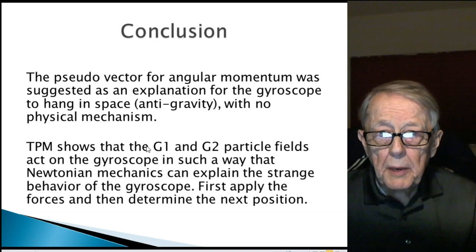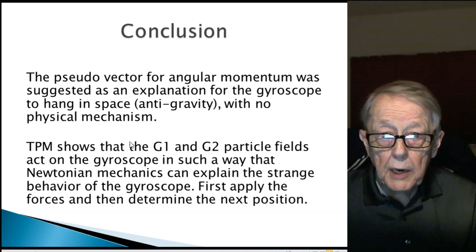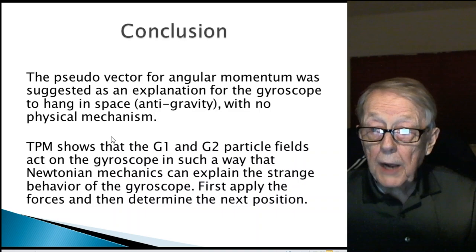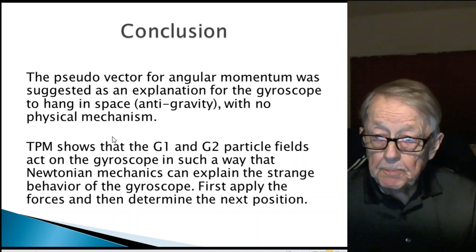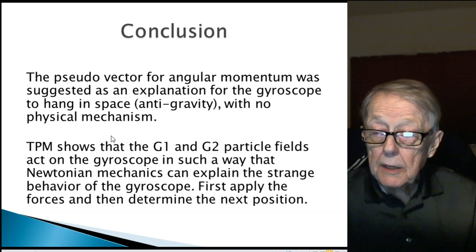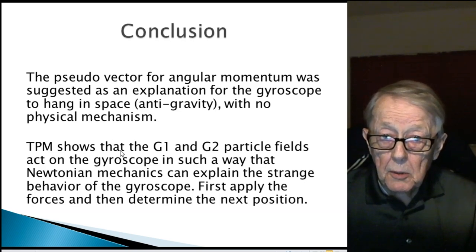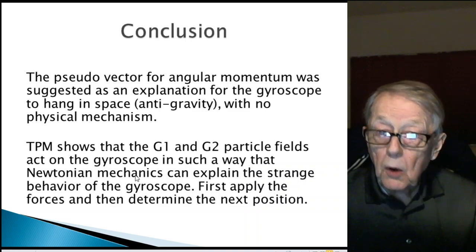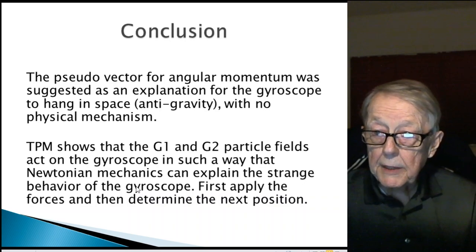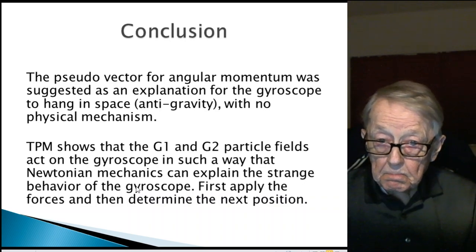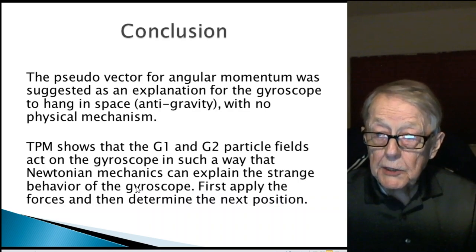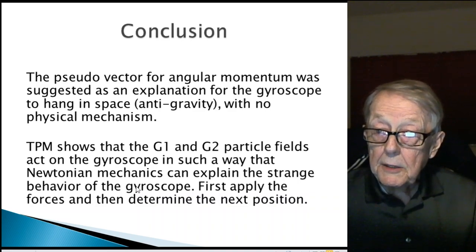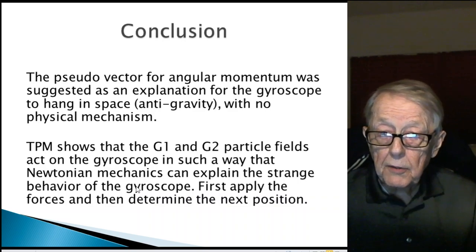Conclusion. The pseudo vector for angular momentum was suggested as an explanation for the gyroscope to hang in space. That's my conclusion. But with no physical mechanism, there's no explanation of what causes that. I basically reject the idea that there's a pseudo vector.